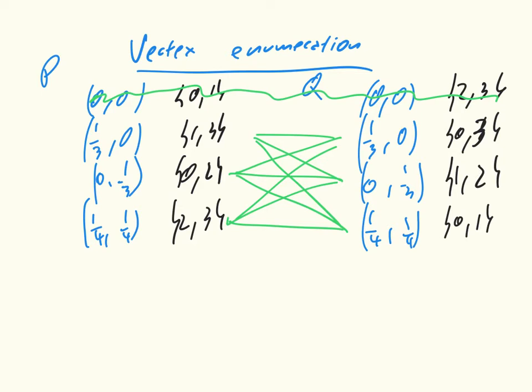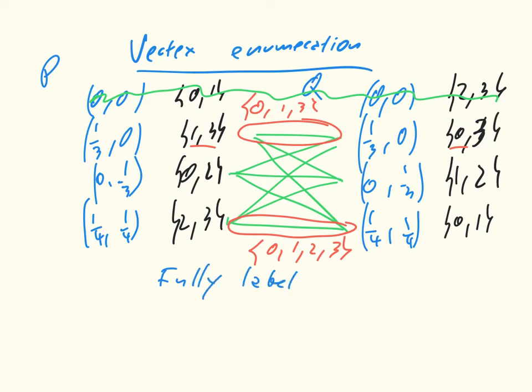So we consider all these pairs, and we look at the union of the labels. For example, for this pair here, the union of the labels is 0, 1, and 3. Neither of these have a 2. And we go through all of them. And in fact, there's only one in this particular set, which is this one, which has all of them. And so this is a fully labeled vertex pair.